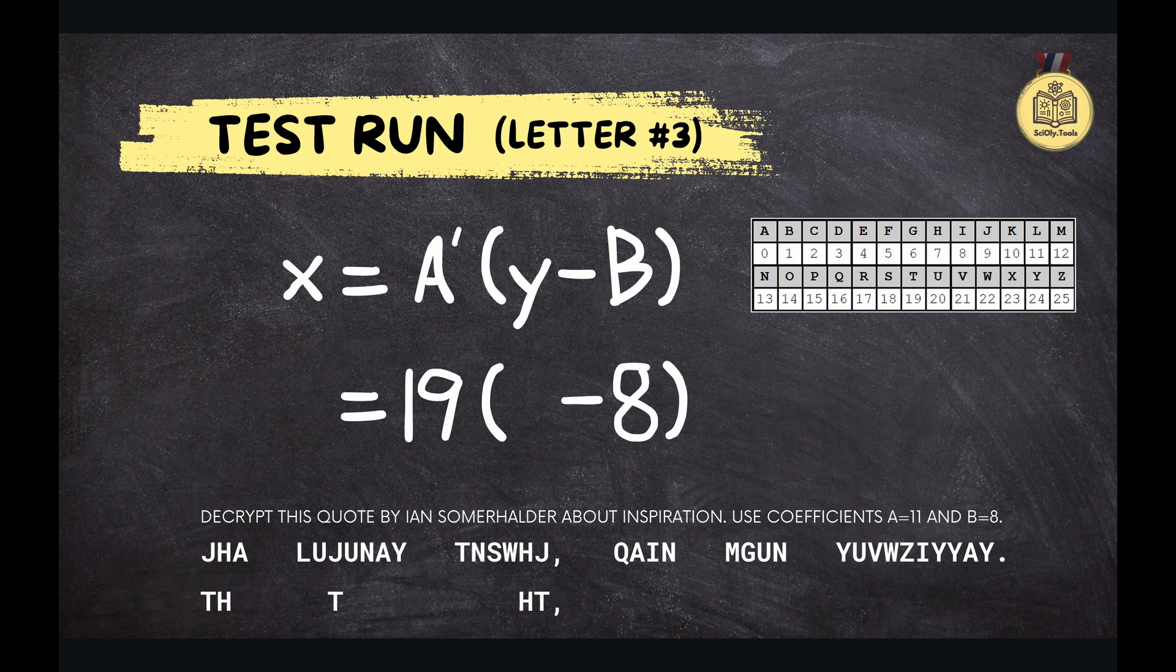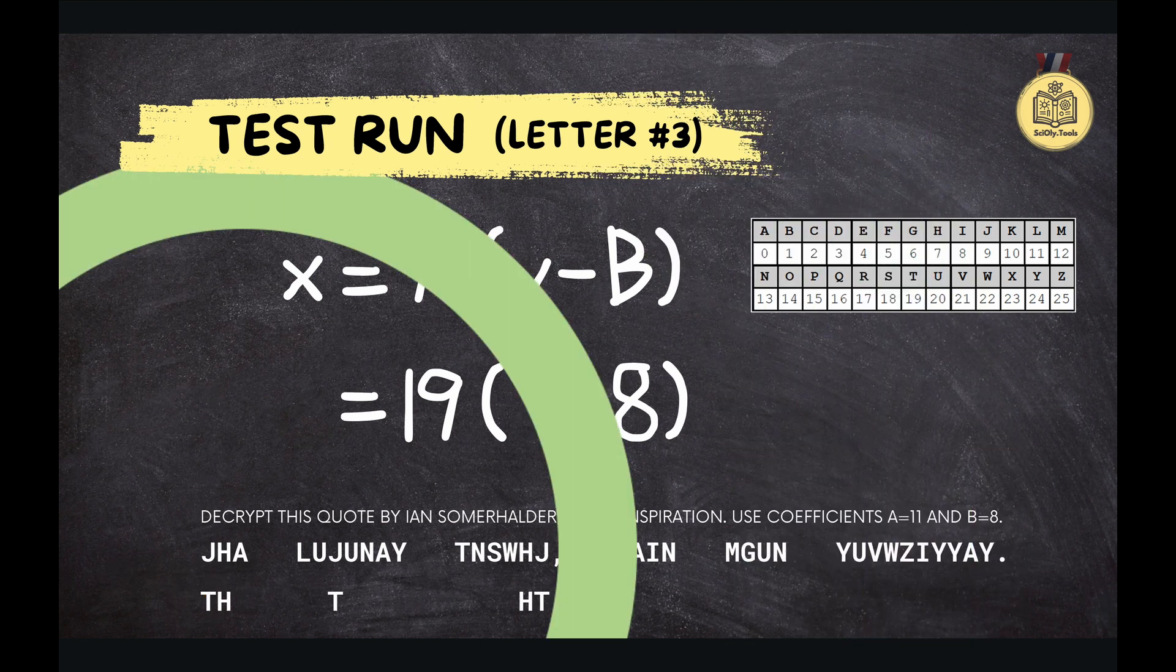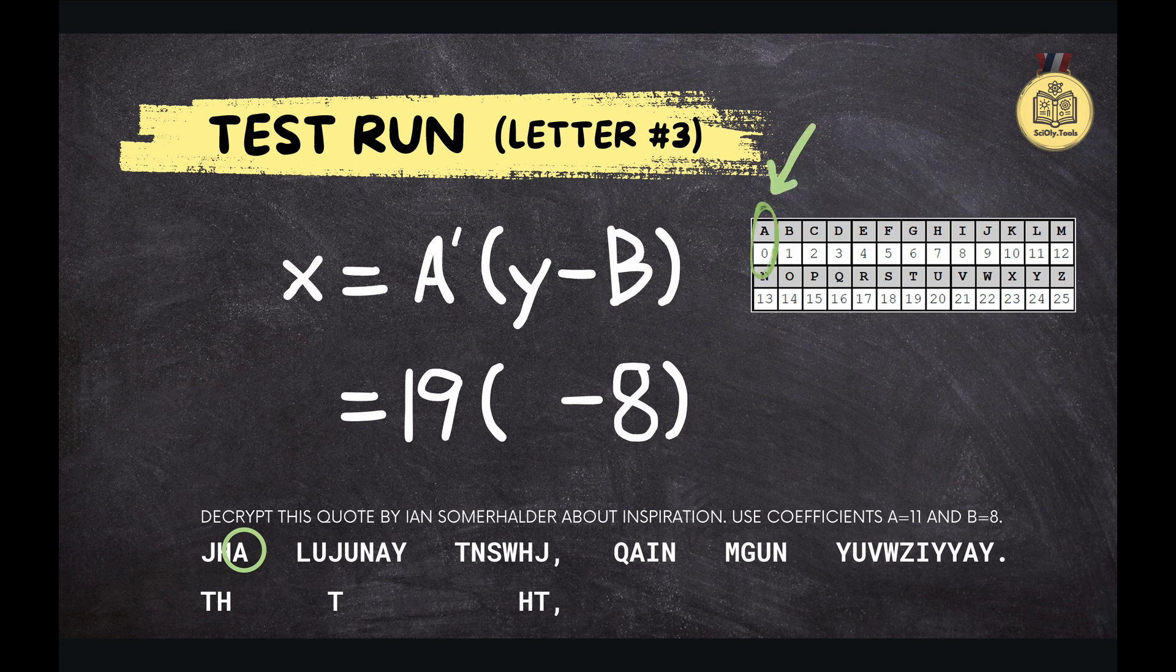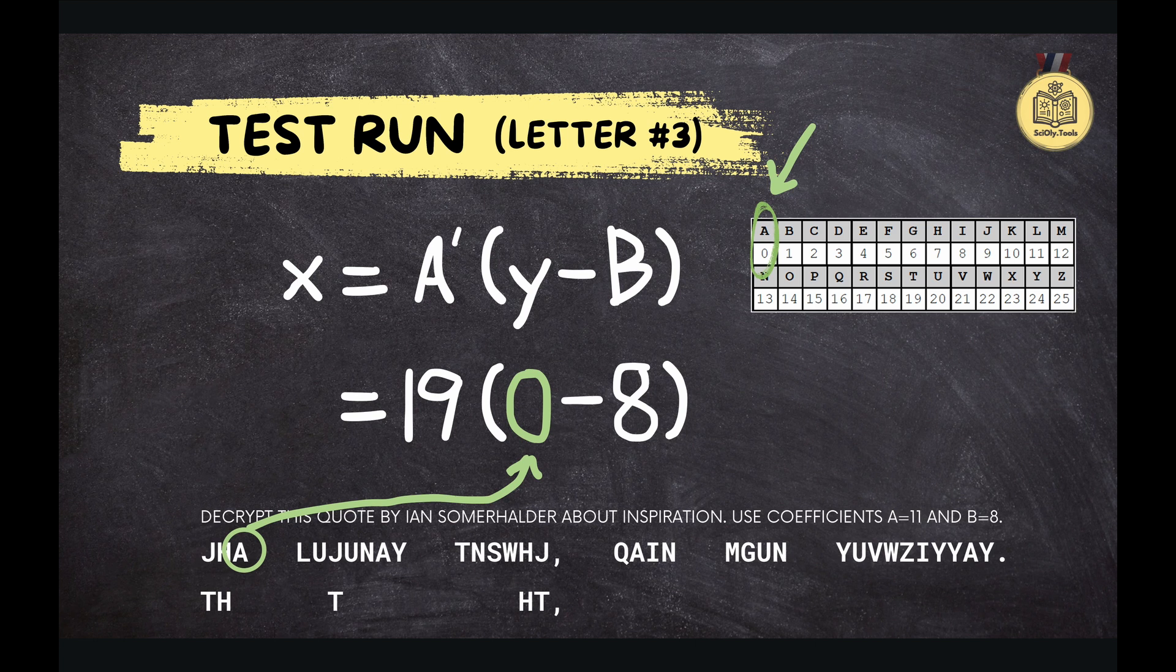That feels like a good start. What's next? Let's try decoding the letter A. A maps to 0 in our table, so we plug that into our formula. X equals 19 times the quantity 0 minus 8, which gives us negative 152. Whoa, that's way outside our table's range. Okay, so we add 26, right? You're right. Adding 26 over and over can be a bit tedious.